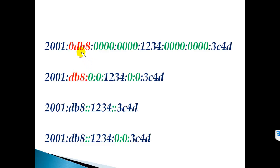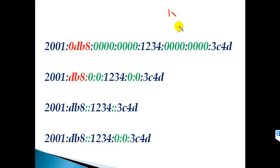Now let's look at how an IPv6 address actually looks. A sample IPv6 address is: 2001:0db8:0000:0000:0000:0000:1234:3c4d. By default, an IPv6 address is a 128-bit address written in hexadecimal format. The 128 bits are divided into portions of 16 bits each, giving us eight groups of four hexadecimal digits.